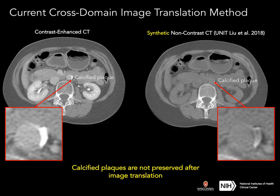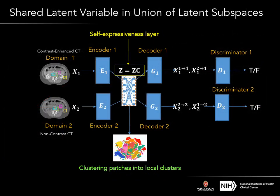We first train an image translation model using the current method. The calcified plaque is corrupted after image translation. To better preserve the plaque structure, we propose two solutions.